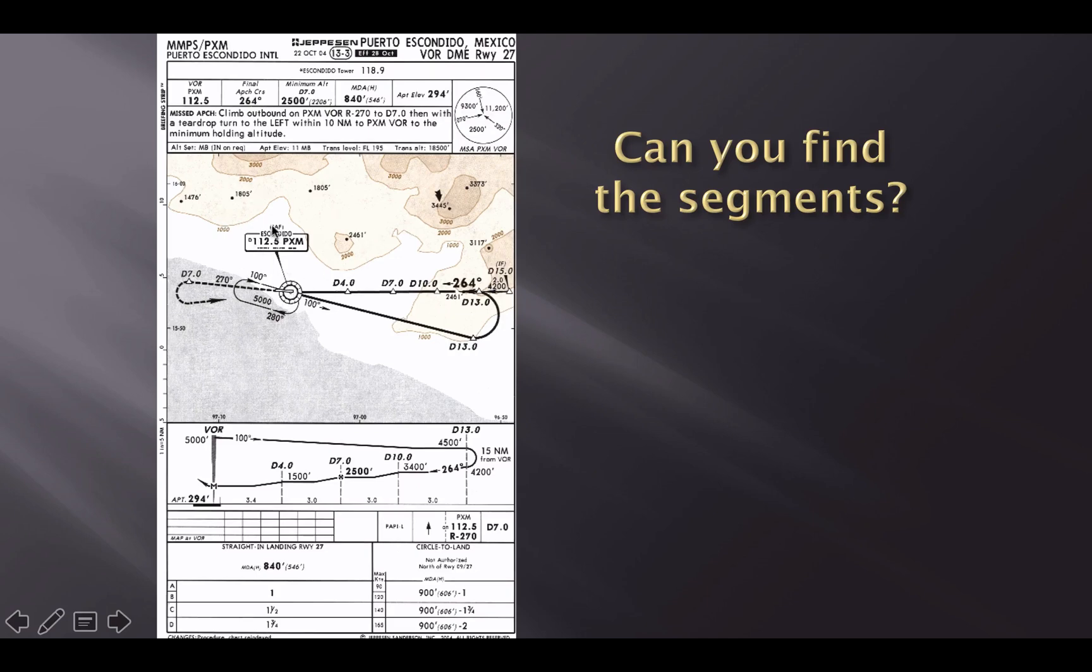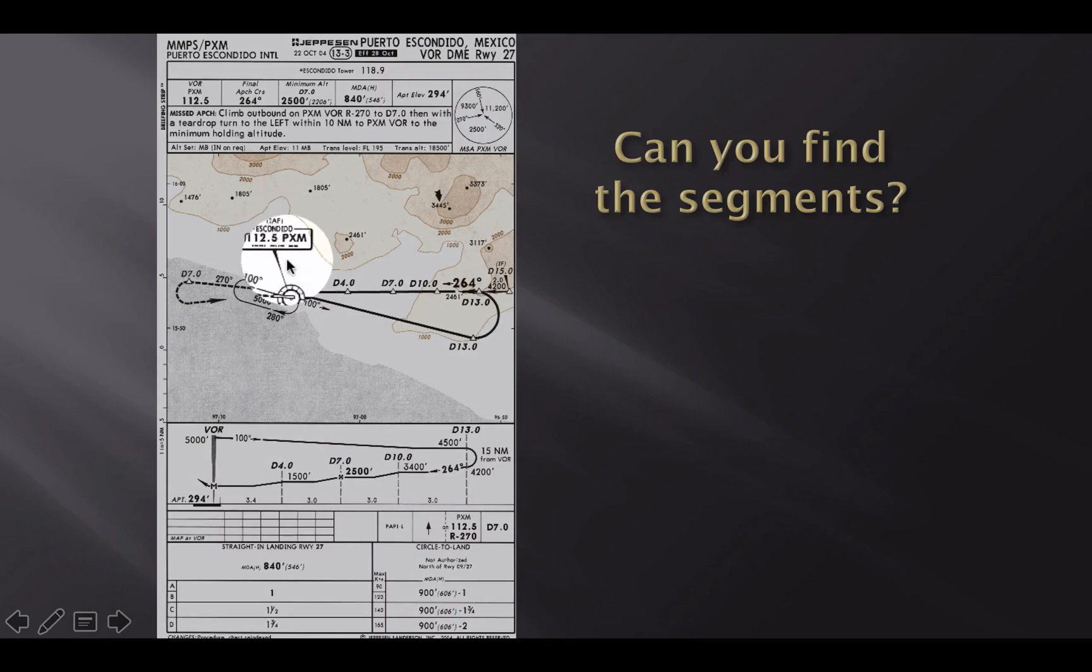But what I'm going to do when I get there, since it's the initial approach fix, it's the first tee on the golf course, is I'm going to follow the instructions, and I'm going to fly outbound, you see the arrow here, on the 100 degree radial. Until I reach 13 DME, DME 13 off of PXM. What do I get to do while I'm on that route? Well, I get to descend from 5,000 to 4,500 feet, 4,500.